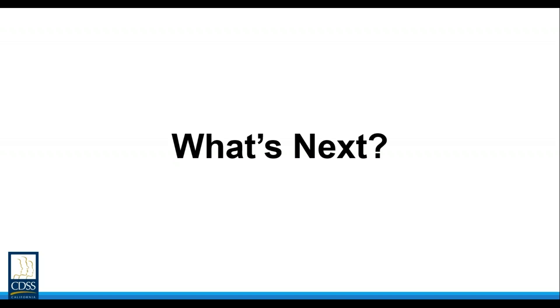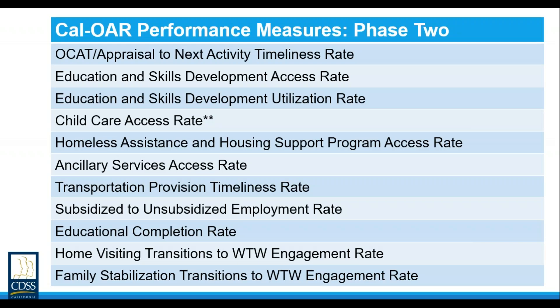Let's take a quick look at the content that will be covered in each of the upcoming performance measure trainings. The phase two measures will be the final training in our performance measure series, but this training will not occur until 2020. Counties are not required to include these measures in the first county self-assessment. Phase two Cal-OR performance measures include: OCAT appraisal to next activity timeliness rate, education and skills development access rate, education and skills development utilization rate, child care access rate, homeless assistance and housing support program access rate, and ancillary services access rate.